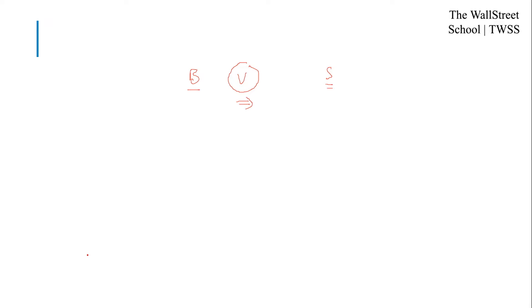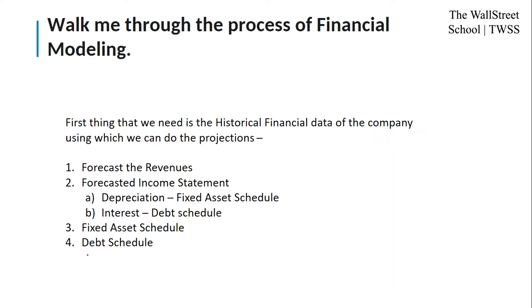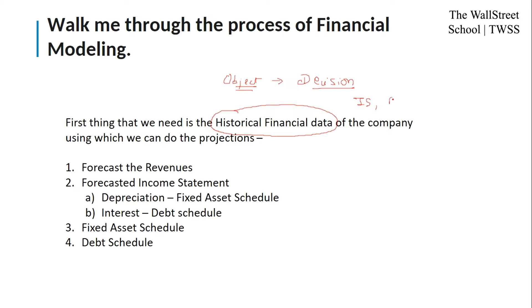The next question is: walk me through the process of financial modeling. The objective of the financial model — the particular decision we are trying to address — should be clear first. Once that objective is clear, we can start working on the model. The first thing we need is the historical financial data of the company: the income statement, balance sheet, and cash flow statement, which will help us do the projections. As far as projections are concerned, we start by forecasting the revenues, which are the primary source of income for the business.